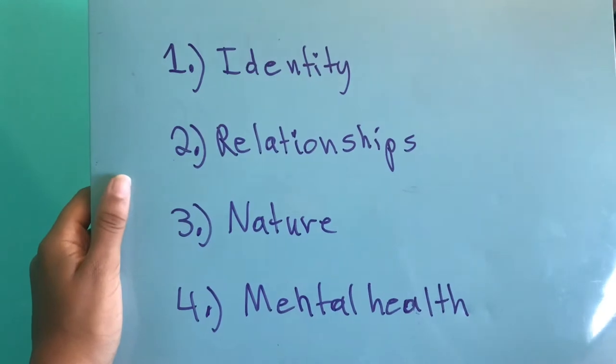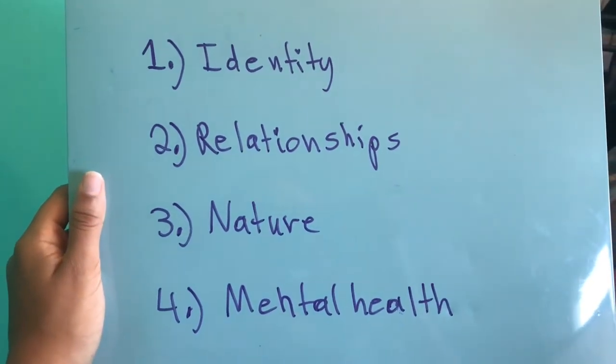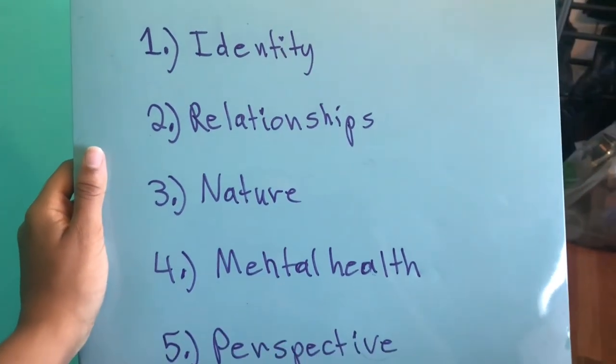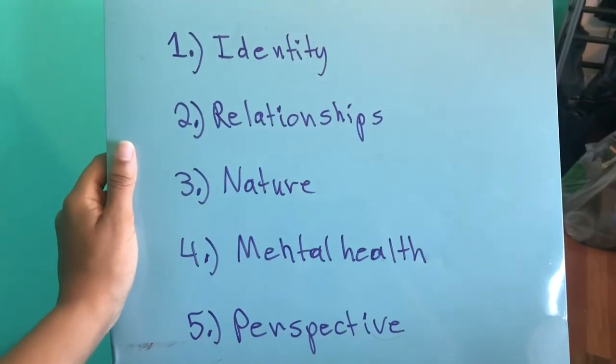Identity, relationships, nature, mental health, and perspective. Of course, you can do your SI on any topic that you would like. Those are just the main ones that I've seen, and that doesn't mean that you're going to get a five if you choose those topics. They're just literally ranging from scores of one through five. I've seen that those are just the main categories that students tend to go into.